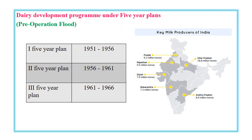We are discussing the dairy development program before Operation Flood. After independence, the Government of India took new initiatives for development on all aspects under the Five Year Plans through the Planning Commission, with specific emphasis on dairy industry development. The first three Five Year Plans covered 1951-56, 1956-61, and 1961-66. In these three phases there was a specific initiative for dairy development, which we will briefly discuss.